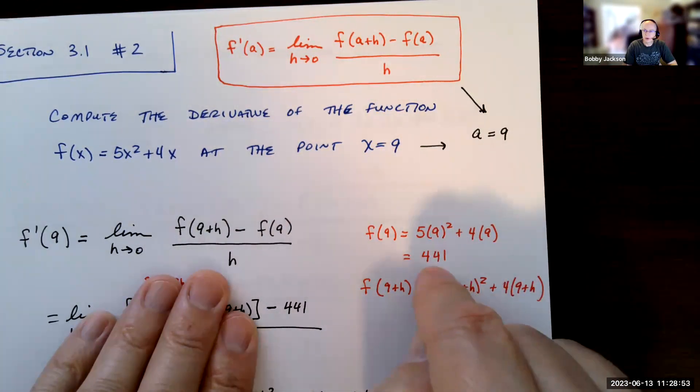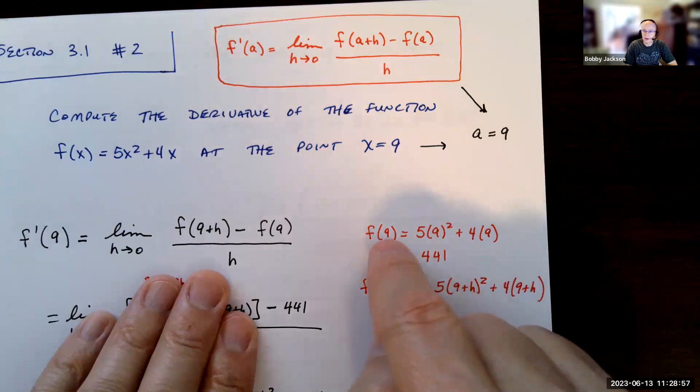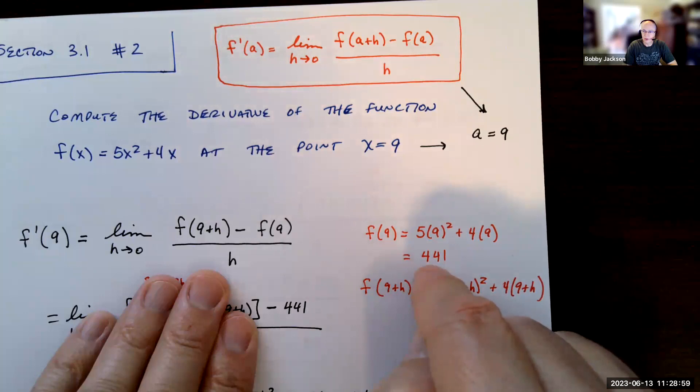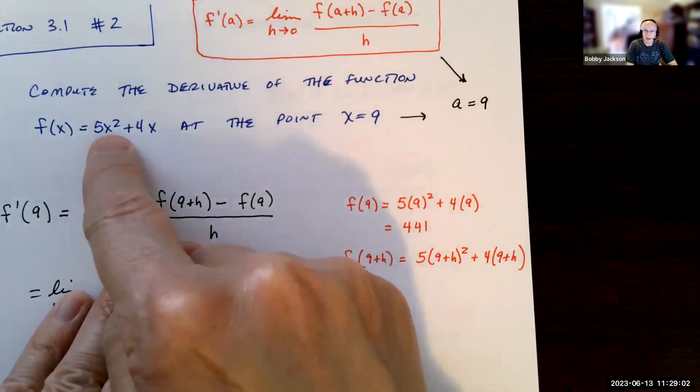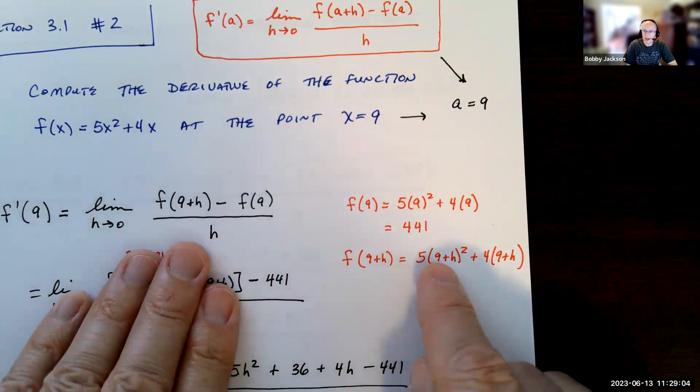What is f(9)? First of all, that's pretty easy - just plug in nine for x and computing all that out I get 441. We plug in nine into the function, so input nine, output 441.